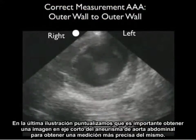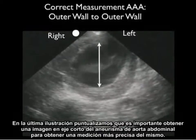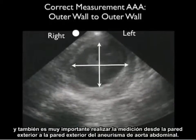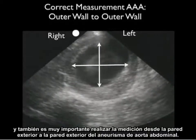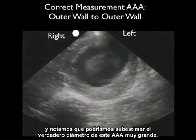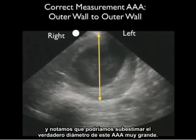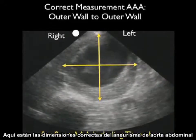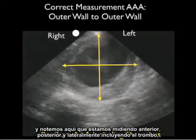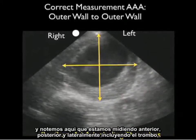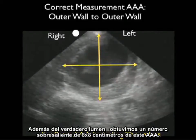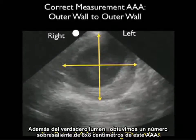It's important to image the AAA in the short axis configuration, but it's also critical to measure from outer wall to outer wall. Measuring only the inner lumen can vastly underestimate the true diameter. The correct method includes measuring anteriorly, posteriorly, and laterally, including the thrombus coating the outer walls in addition to the true lumen. Using this technique, we get an accurate measurement of 8 by 8 centimeters on this AAA.